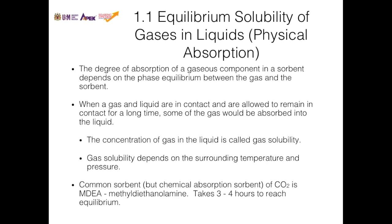The equilibrium solubility of gases and liquids is a very important parameter in the absorption process. The degree of absorption of a gaseous component in a sorbent depends on the phase equilibrium between the gas and the sorbent. When a gas and liquid are in contact and allowed to remain in contact for a long time — that is, when it reaches equilibrium — some of the gas will get absorbed into the liquid. The concentration of gas in the liquid is called gas solubility, or how much of the gas can get absorbed by the liquid.